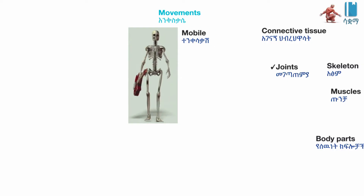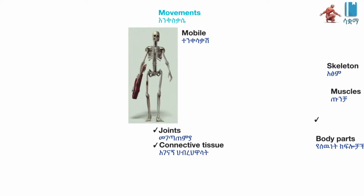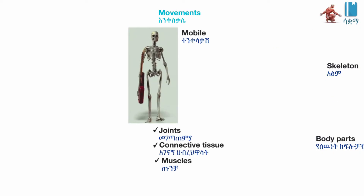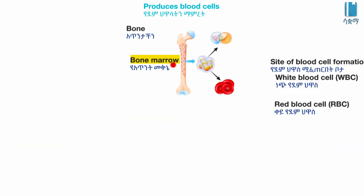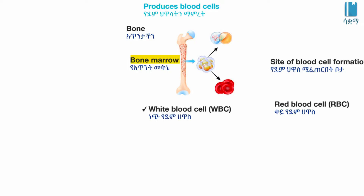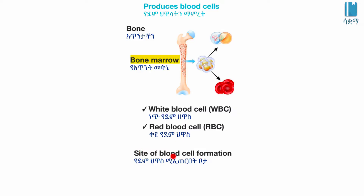Our joints help our connective tissues. The red blood cells and white blood cells are related to the bone marrow. The bone marrow and blood cells help produce and support various body functions.